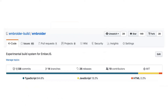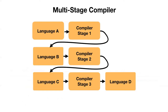Embroider is a multi-stage compiler. A multi-stage compiler is when you break the work into different pieces so that you can go from language A to language D not in one step, but taking intermediate steps along the way. This is a very powerful pattern that we see again and again in computing.